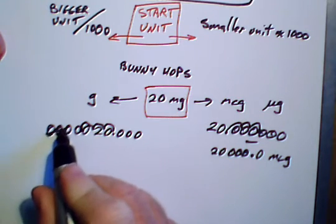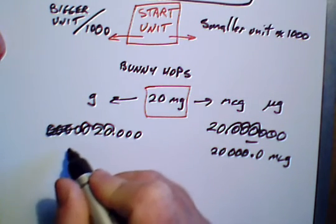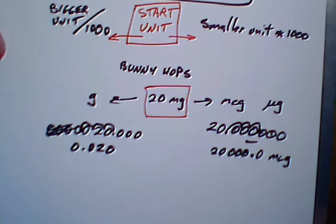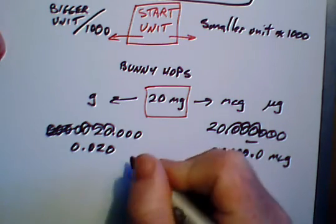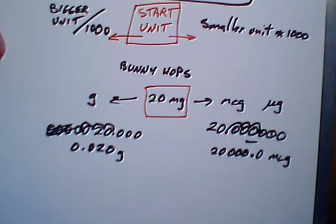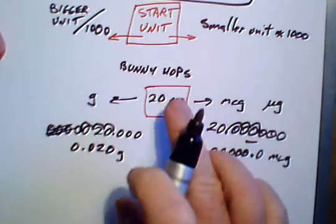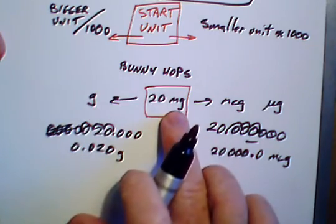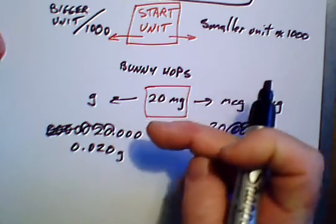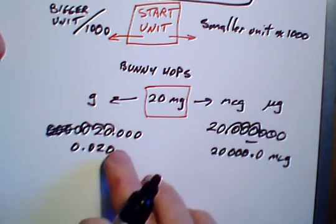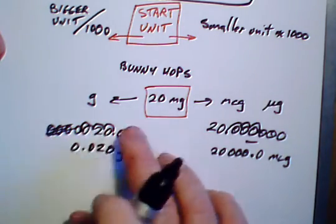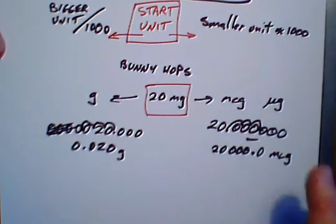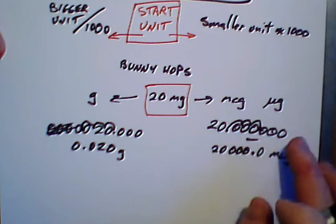So, we don't worry about these extra zeros out the front there. That becomes 0.020. And that will be in grams. So, if you've got the bigger unit, which is grams compared to the start unit, we're going to be going to the left. So, three jumps to the left. If we have our start unit to become a smaller unit, then we're going to be doing three jumps to the right.